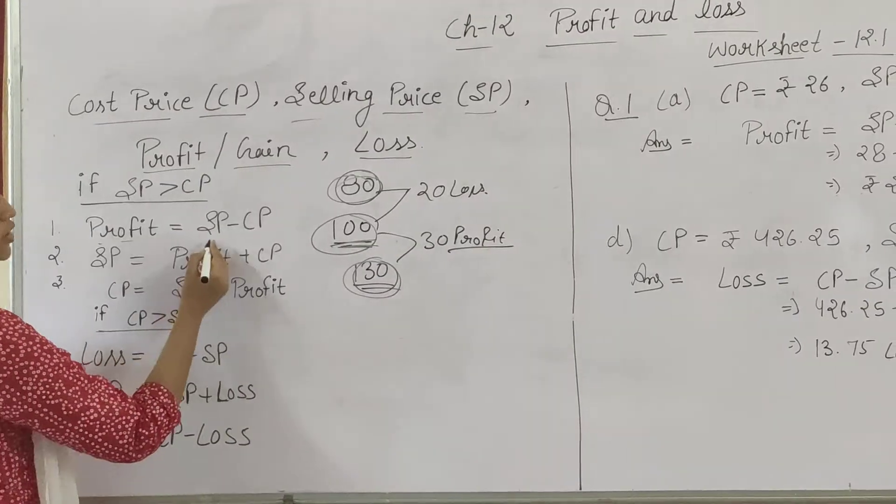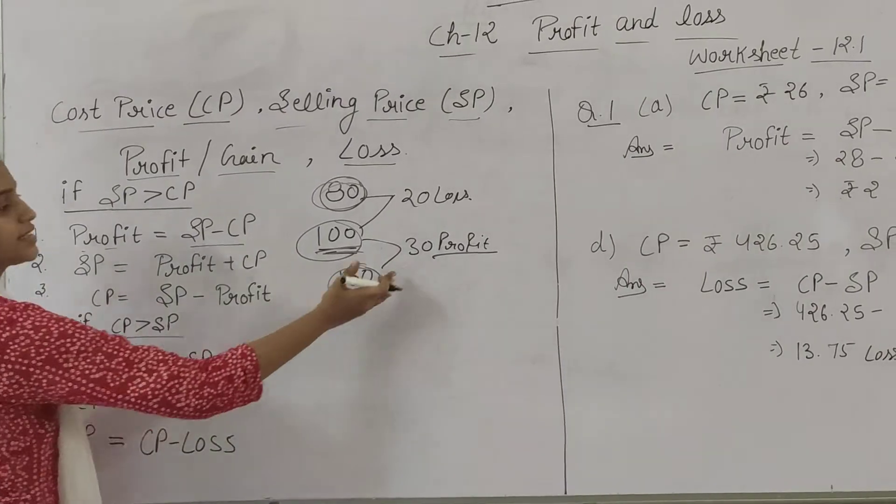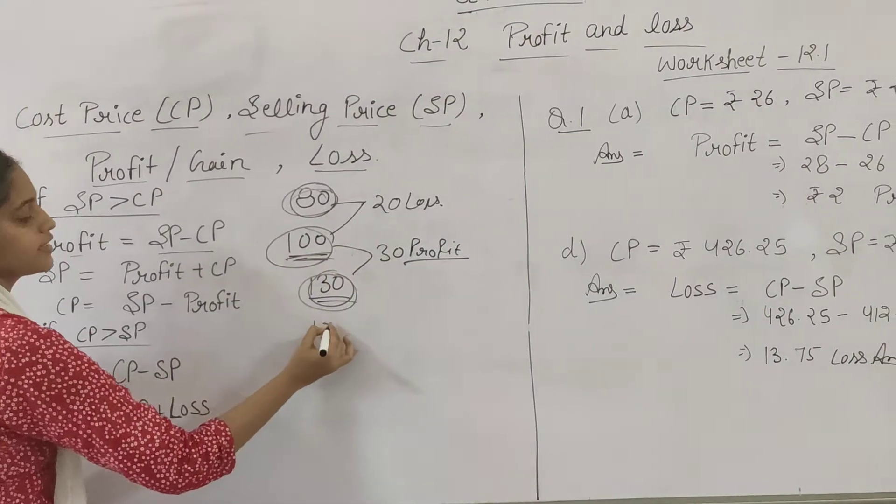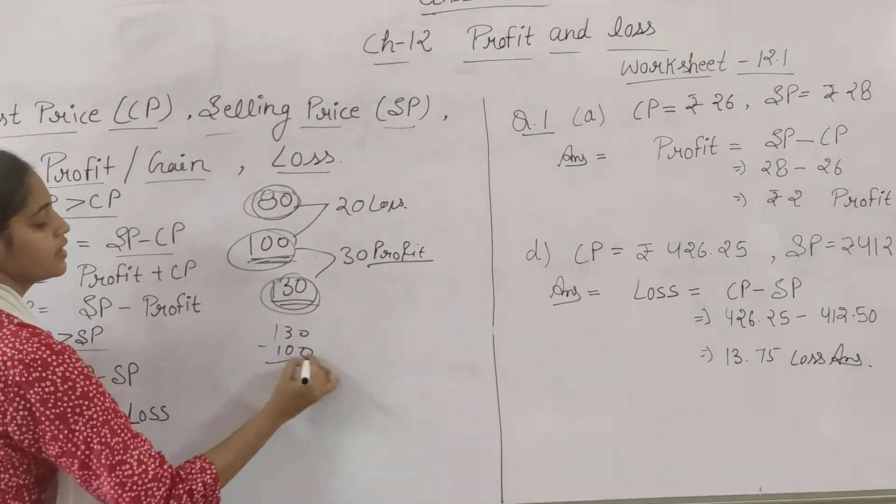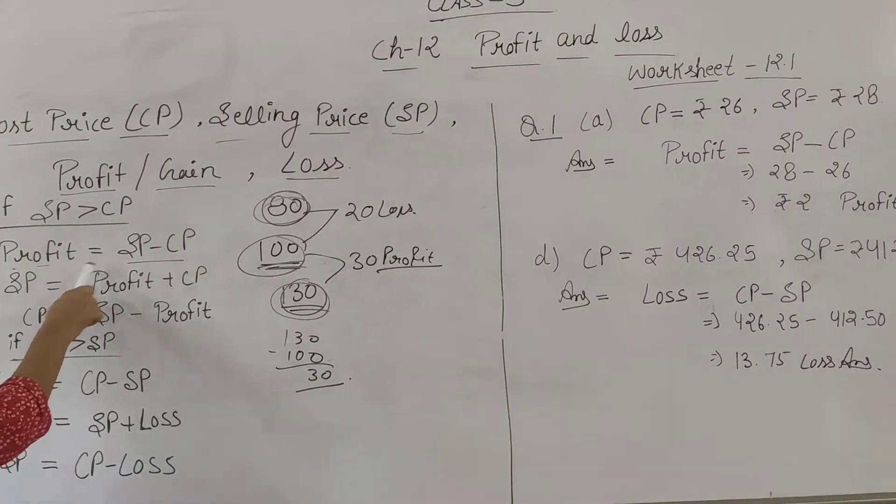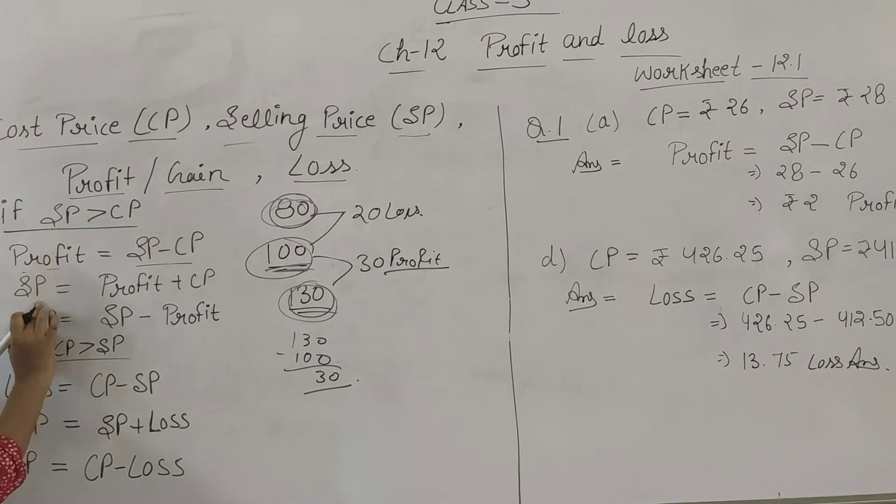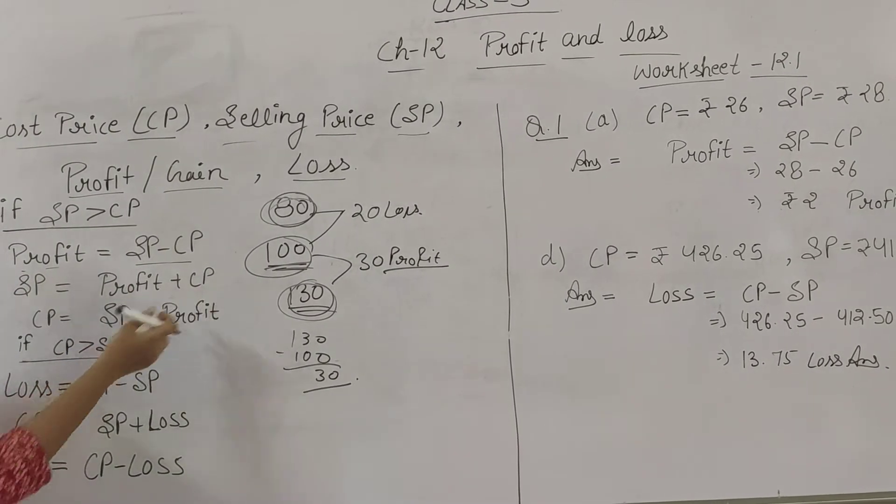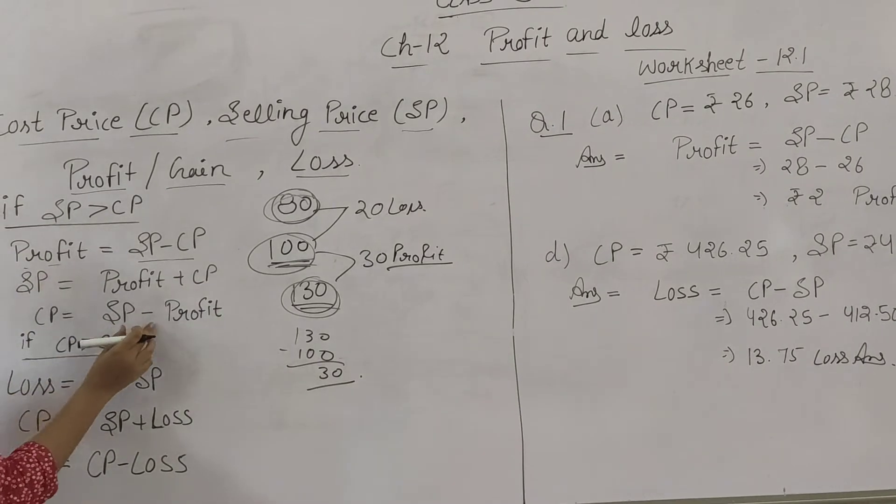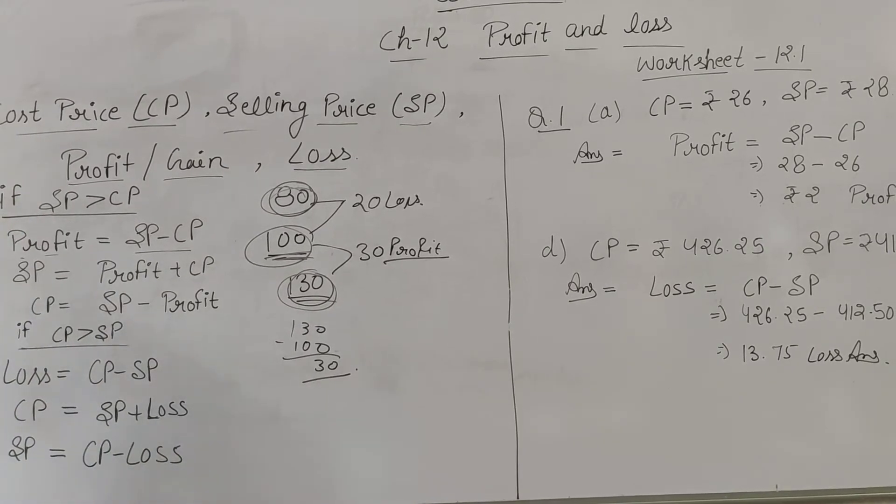What will be the profit? SP minus CP. If we have 130 and bought at 100, profit is 30. The formulas are: SP = Profit + CP, and CP = SP - Profit.